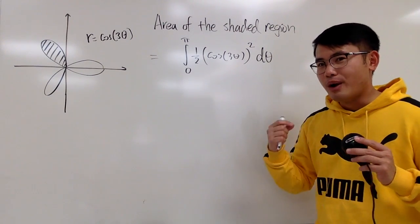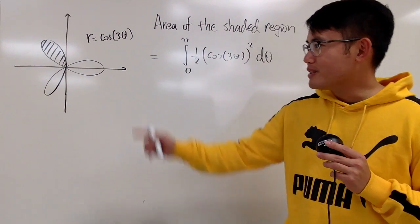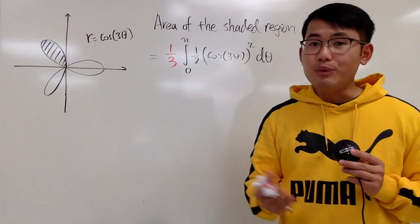This gives you the whole area, this, this, and that, all together. But you don't want the whole thing. You just need one piece. So we can just multiply this by 1 over 3. And you are done.